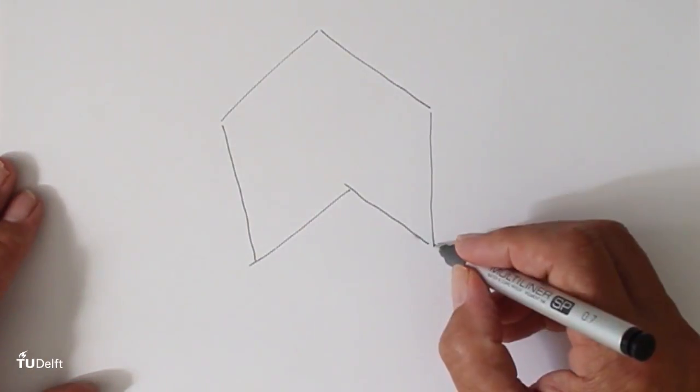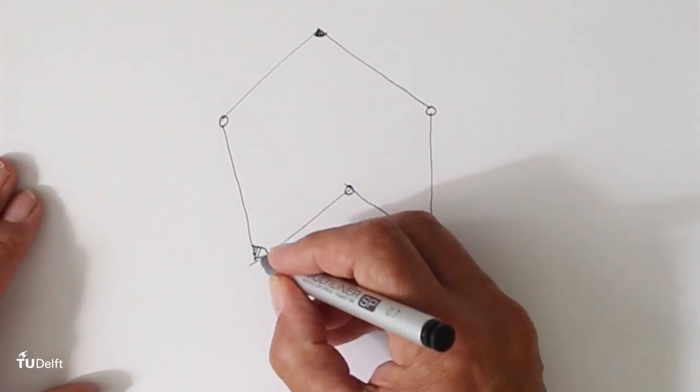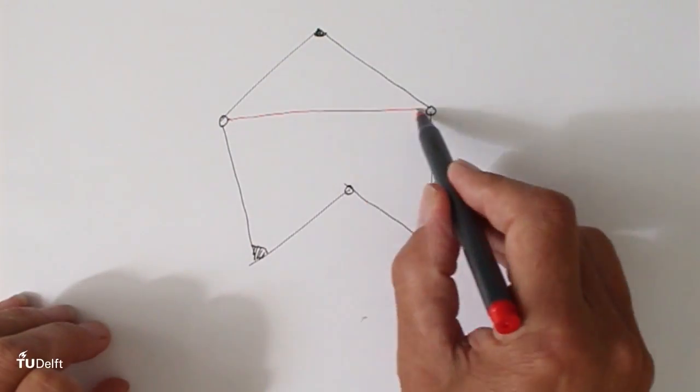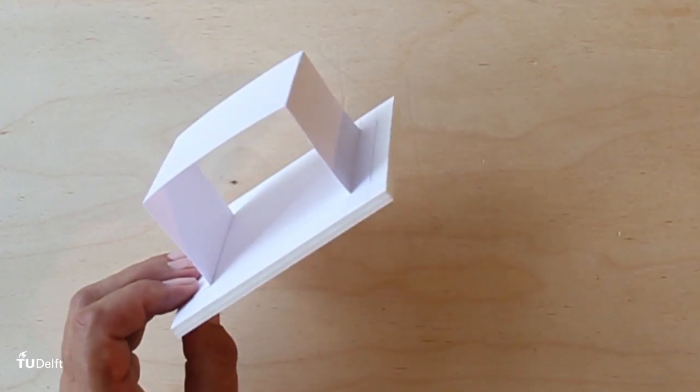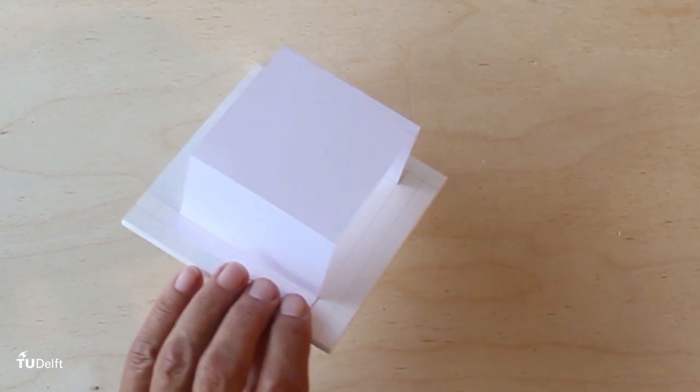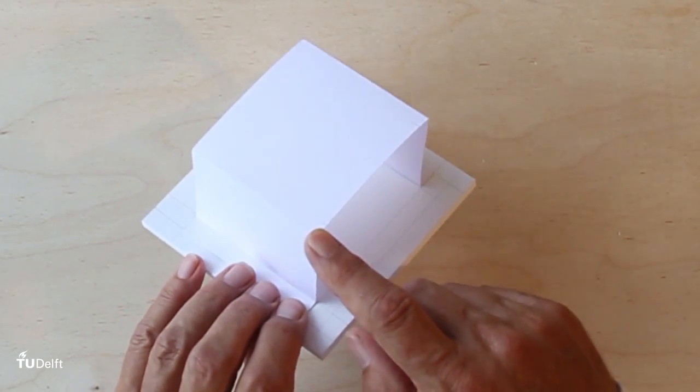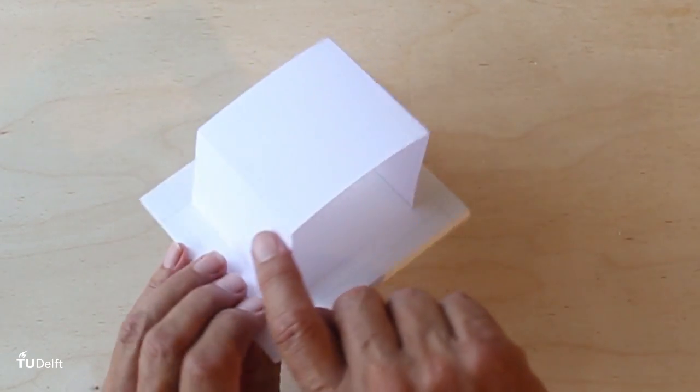We can consider a construction with a floor, columns or walls, and a beam or floor over it as a frame. If you want to give such a rectangular frame with more than three connections a fixed form, there are two options to do so.